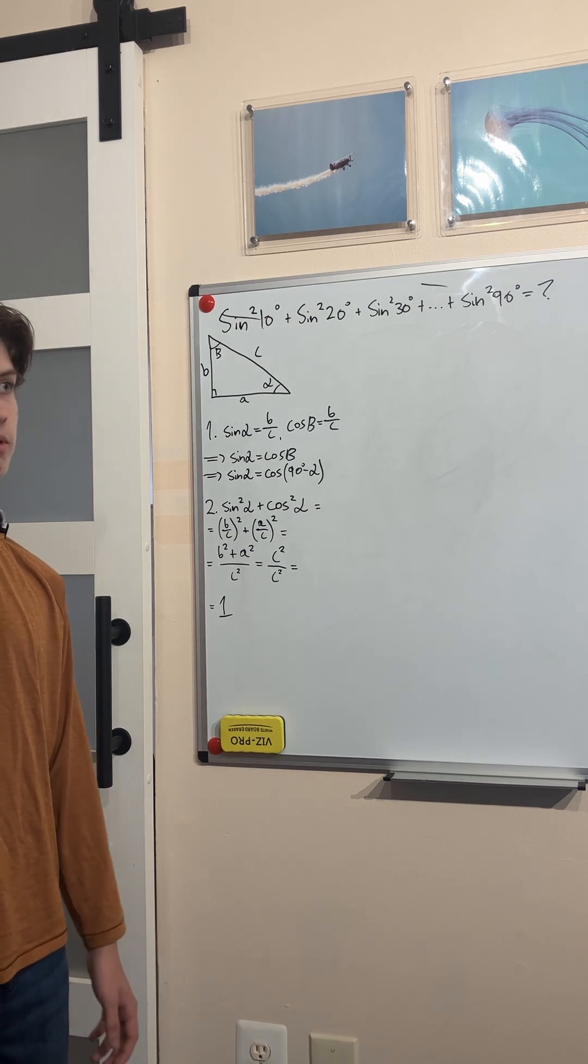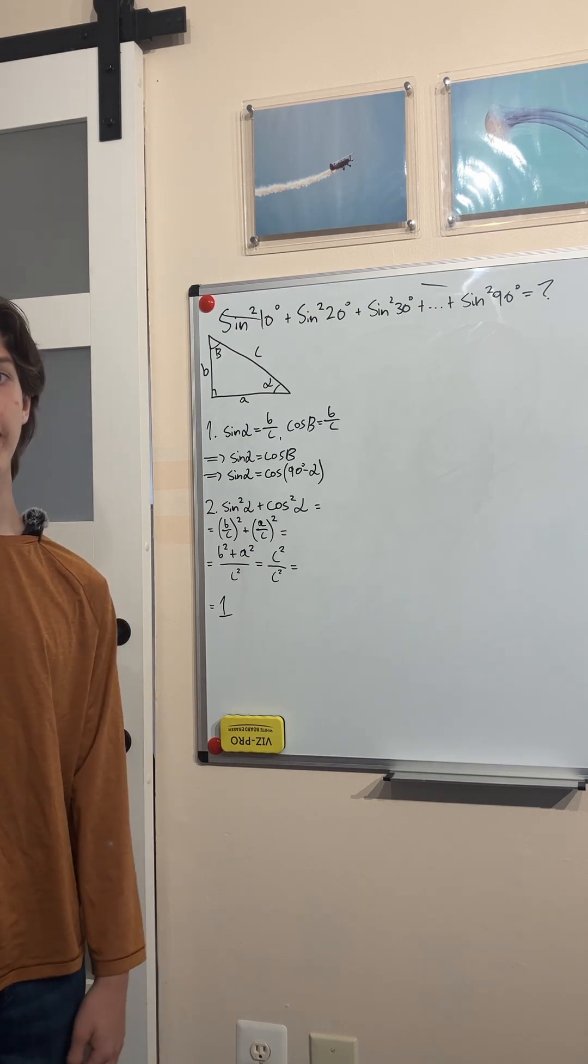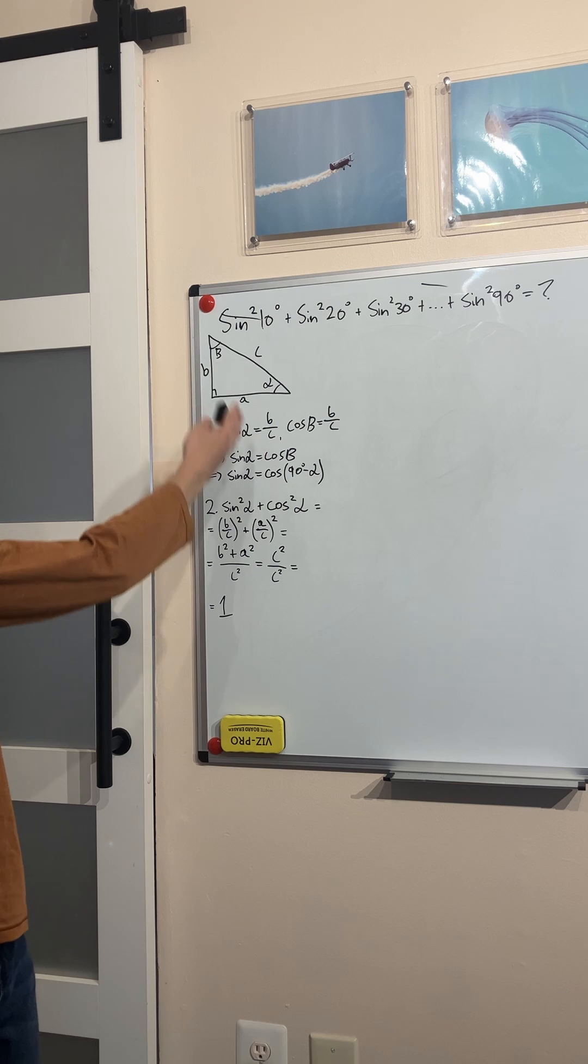But before we can try this problem, we have to recall two important trigonometric identities. I'm going to show you both of them right here very quickly using this right triangle.